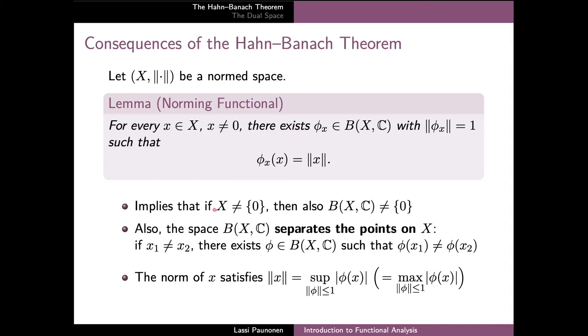And this seemingly quite simple result again has a few important and useful consequences. First of all, the result says that if the space X is non-trivial in the sense that it contains at least one non-zero element, then also the space of bounded linear functionals on X is non-trivial. Moreover, the linearity of the functional also implies that the space B(X,C) separates the points on X, meaning that for any two distinct points on X, we can find a bounded linear functional such that the values of the functional at these two points are different.